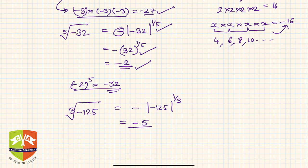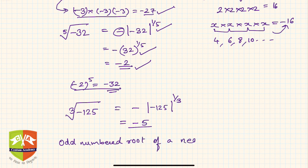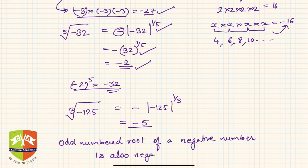So you also understand that the odd-numbered root of a negative number is also negative — you will not get a positive nth root of a negative number. Please keep these things in mind, as they will be useful in many applications of mathematics. Thank you.